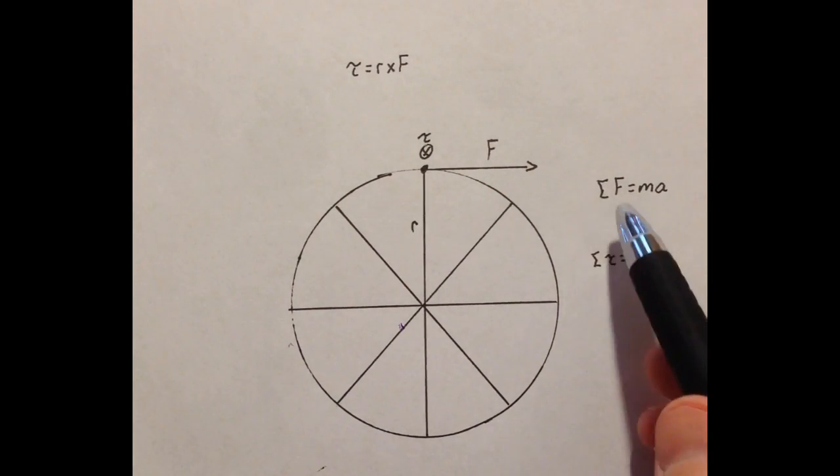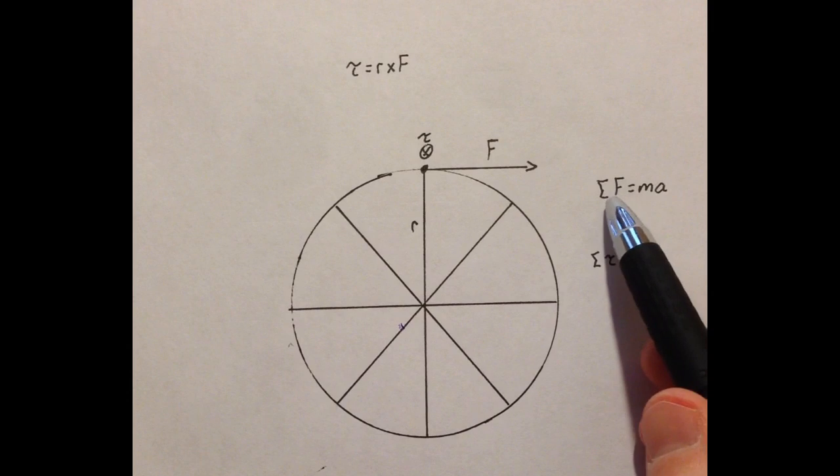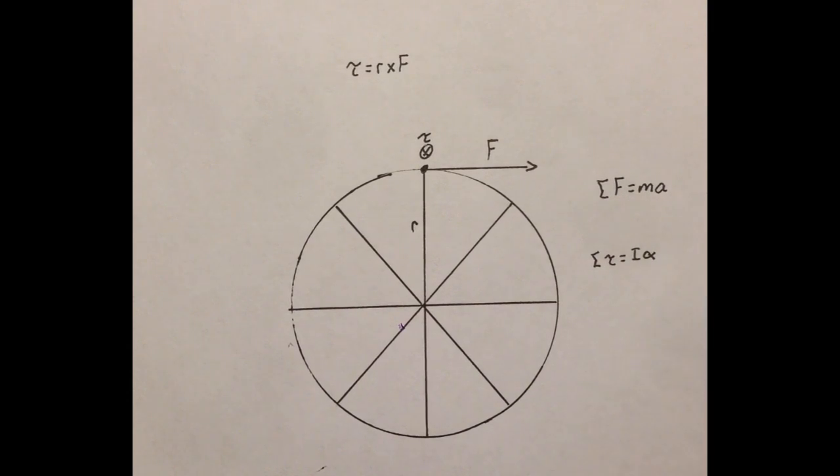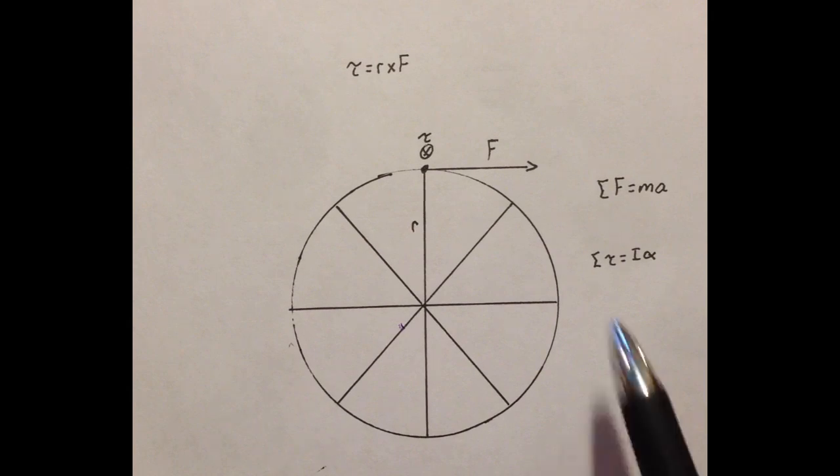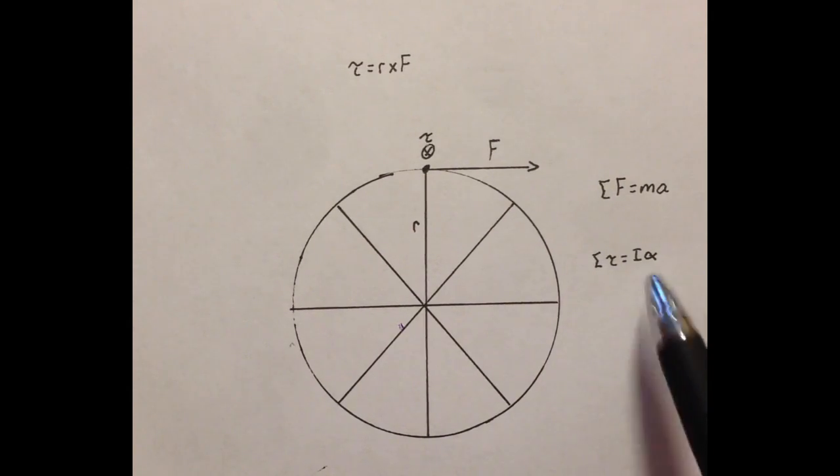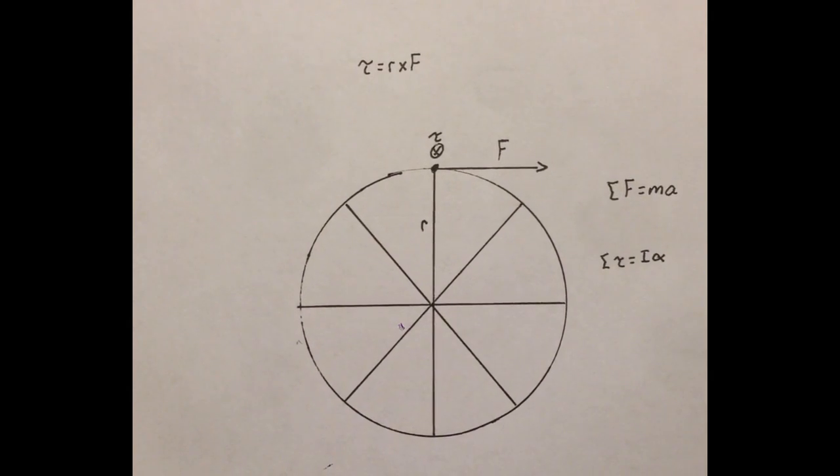This should make a lot of sense to you, because if F equals ma, and a force produces an acceleration obviously in that same exact direction, and torque equals I alpha, then a torque should produce an angular acceleration. The torque and the angular acceleration should point in the same direction, and we use the right-hand rule for angular acceleration as well.